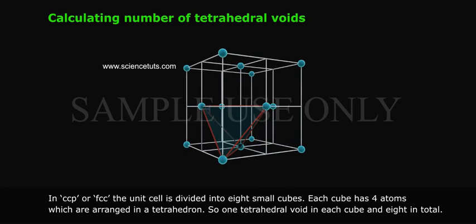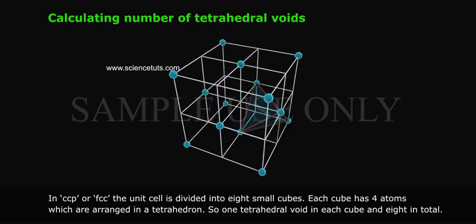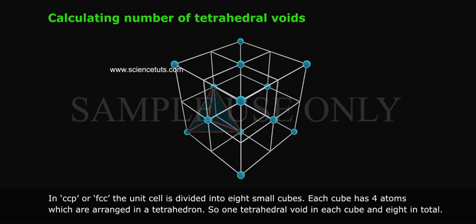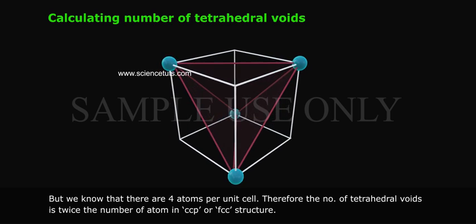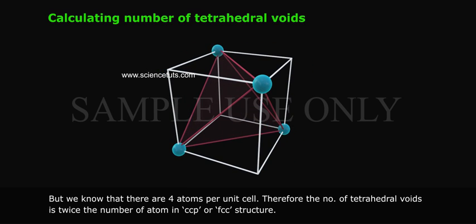Calculating number of tetrahedral voids. In CCP or FCC, the unit cell is divided into 8 small cubes. Each cube has 4 atoms which are arranged in a tetrahedron. So 1 tetrahedral void in each cube and 8 in total. But we know that there are 4 atoms per unit cell. Therefore, the number of tetrahedral voids is twice the number of atoms in CCP or FCC structure.